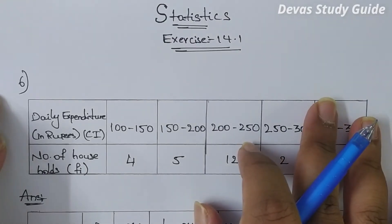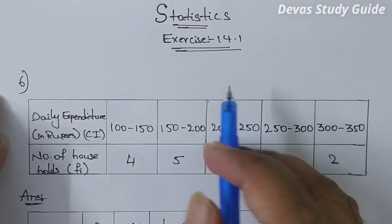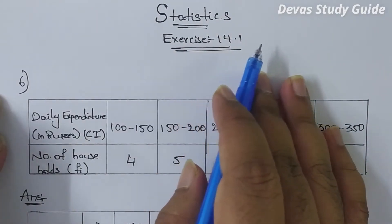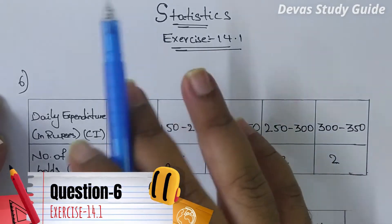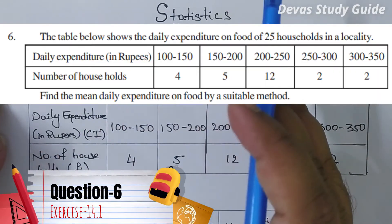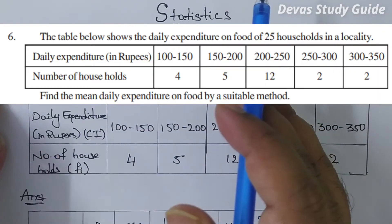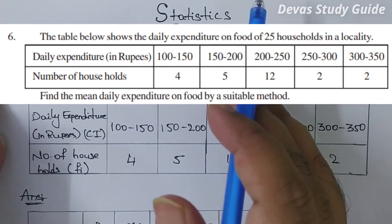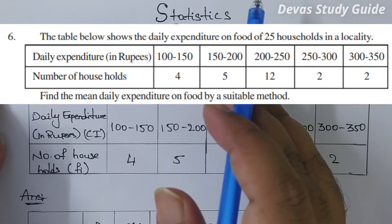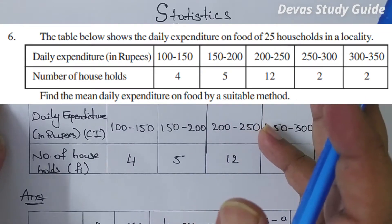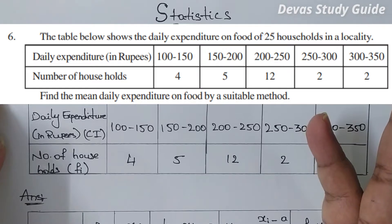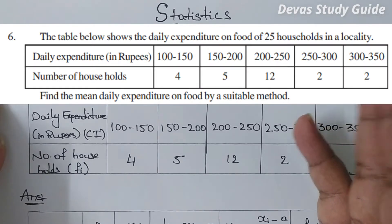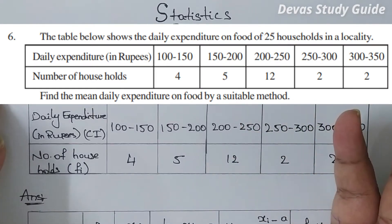Hello friends, welcome to Devas Delicate. Previous exercise 14.1, 5th question and 6th question. The table below shows the daily expenditure on food of 25 households in the locality.